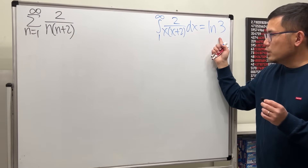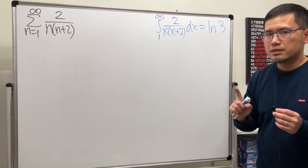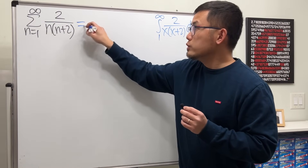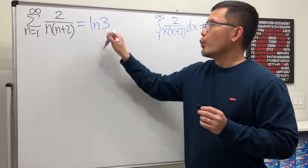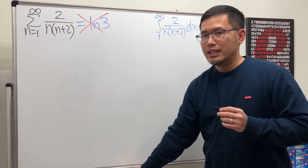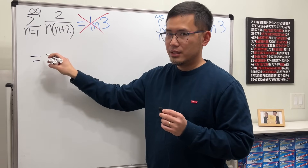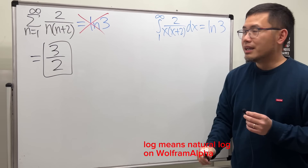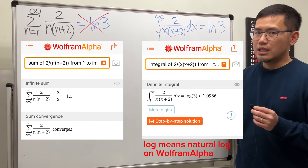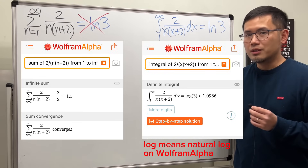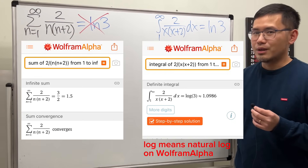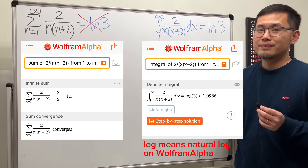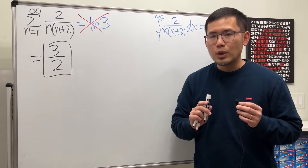Since this integral is equal to ln3, here's the deal: we cannot say this infinite series is also equal to ln3. We cannot say that. In fact, this infinite series is equal to 3 over 2. Take a look at Wolfram Alpha — the integral is ln3 (they use 'log' for natural log), and the infinite series is 3 over 2.